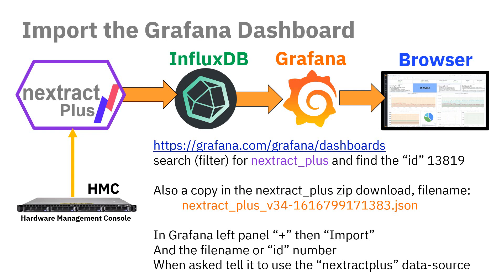When you go into Grafana in your browser, on the left-hand side there's a plus sign for adding new things. Click on Import, and you can either add the file name — presumably you've copied the file down to your workstation — or you can type in the ID number, in which case it will go to grafana.com to find the dashboard. When it loads, it will ask which database should be the default — for us it's the NExtract Plus database. Then you'll select your server, your VIO server, and your LPAR, and you'll have a whole set of graphs to look at.